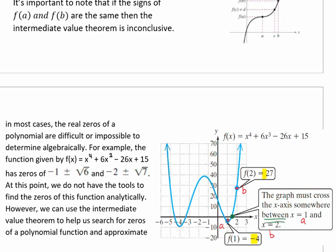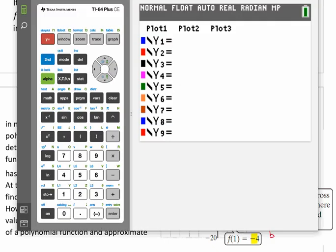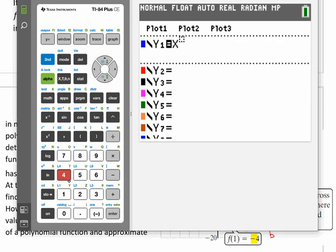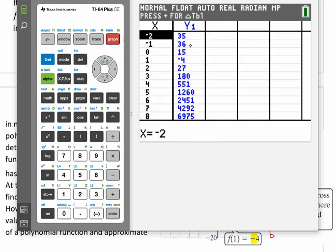We can see this actually occurring on a table as well. Let's look at it on a graphing calculator. We're going to plug in that equation: x⁴ + 6x³ - 26x + 15. And we can pull up the table there.